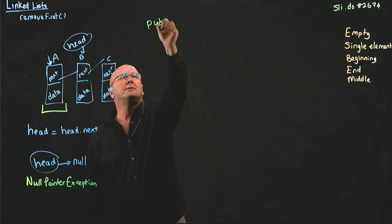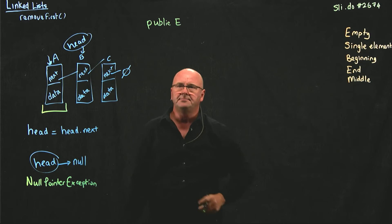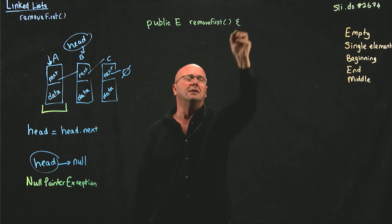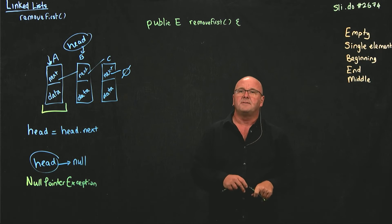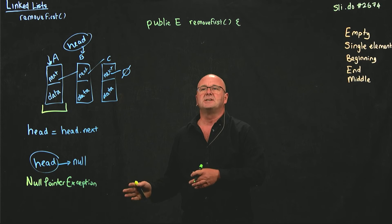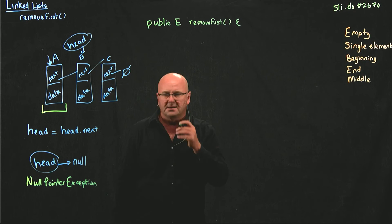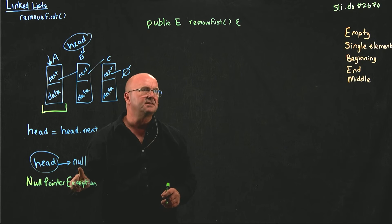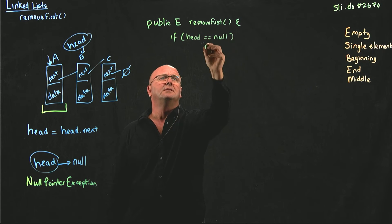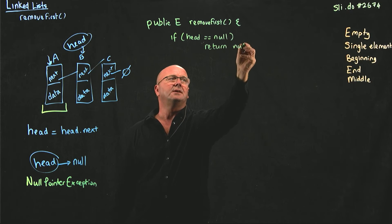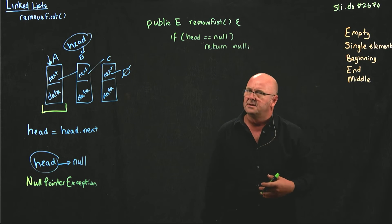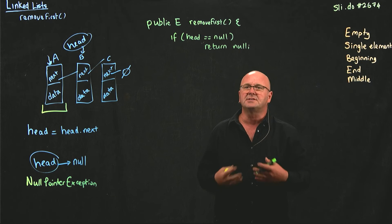Let's take a look at the code. We're going to have a public E removeFirst. The very first thing we want to do is check and see if our list is empty. If our list is empty, we don't need to proceed — we just need to return null. How do we know if our list is empty? It's if head is pointing to null. So if head equals null, return null. Your documentation may say if the list is empty, we're going to throw a NoSuchElementException.